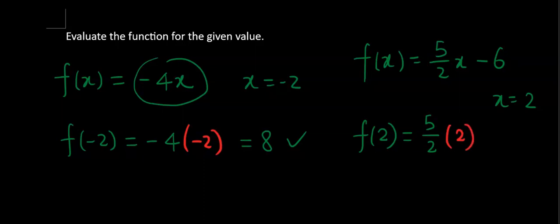2 times 2—one is on the top, one is at the bottom. Therefore, 2 divided by 2, that is 1. 1 times 5, that's 5. And 5 minus 6 gives us negative 1.